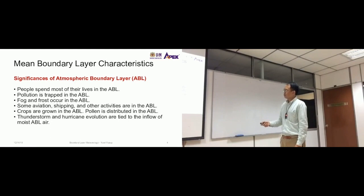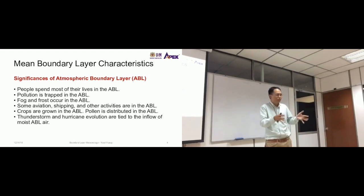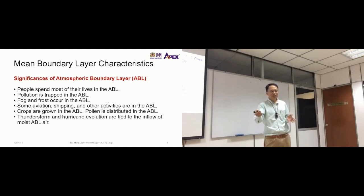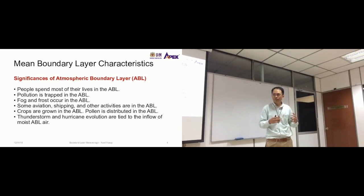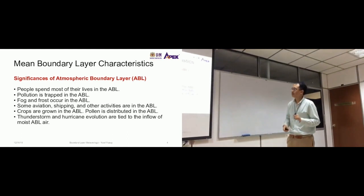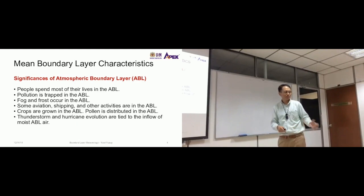Thunderstorm and hurricane evolution are tied to the inflow of moist ABL. If you have high content of water in the atmospheric boundary layer, it contributes to the generation of thunderstorms and hurricanes. In other parts of the world, hurricanes and thunderstorms could come from other regions, but in Malaysia we are confined in our small space because we are protected by Indonesia and the east coast. Our weather is mostly influenced by local influences. The heavy rain we get is mostly generated within the same area, not from very far locations most of the time.